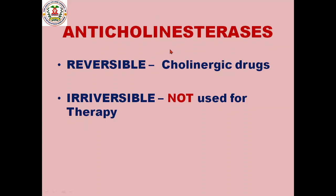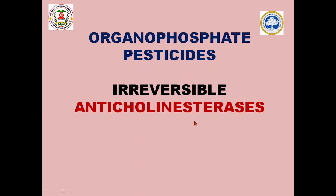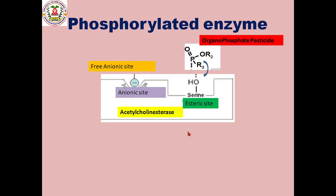There are two types of anticholinesterases. One is reversible anticholinesterase — these are indirectly acting cholinergic drugs like physostigmine and neostigmine. The second group is irreversibly acting anticholinesterases. These are not actually drugs but chemicals, because they block the cholinesterase enzyme irreversibly and cannot be used for therapy. Organophosphate pesticides come under this irreversible anticholinesterase group.